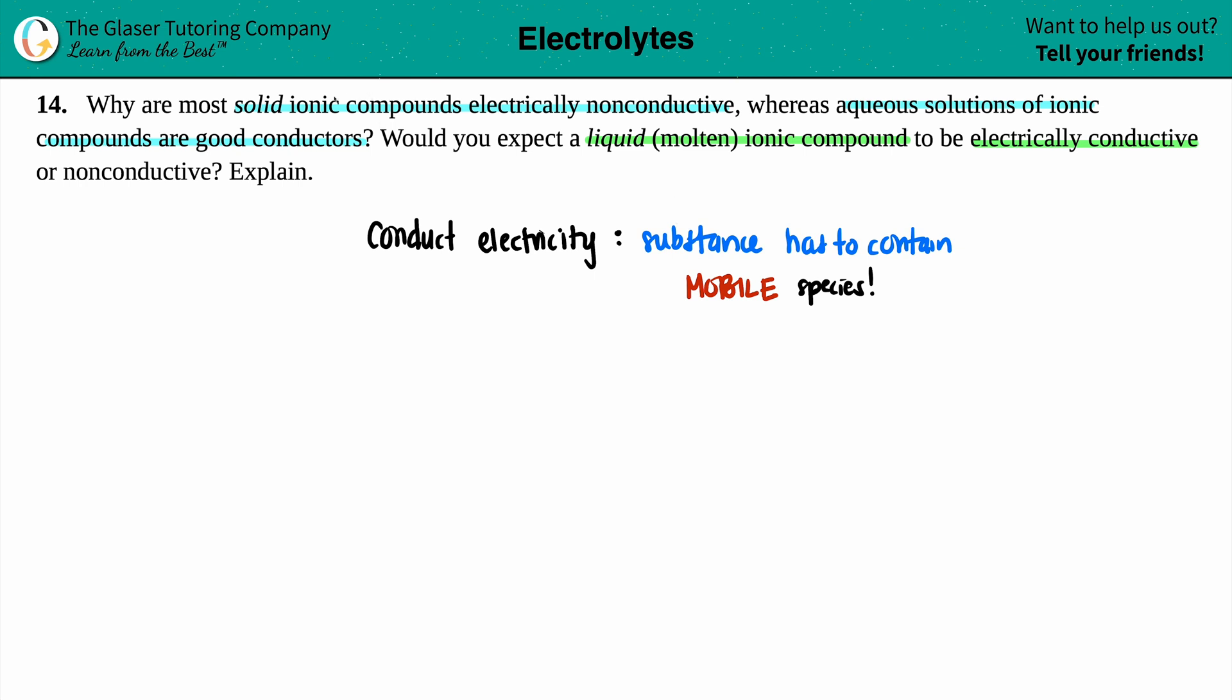So in this case, we're specifically talking about ionic compounds. We have solid ionic compounds, aqueous ionic compounds, liquid ionic compounds. So for this question to work specifically, the substance here is an ionic compound. And remember that an ionic compound is just a metal and a non-metal.